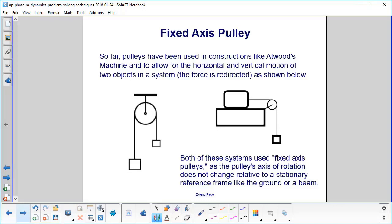Fixed Axis Pulley. So far, pulleys have been used in items like Atwood's machine, and to allow for the horizontal and vertical motion of two objects in a system. For example, if we have a block here on a table and we have a pulley here, so this block is going to pull down and this block is going to go in this direction, so the force is being redirected. Both of these systems use fixed axis pulleys as the pulley's axis of rotation does not change relative to a stationary reference frame like the ground or a beam or a table.